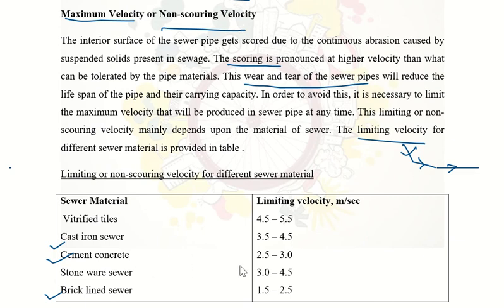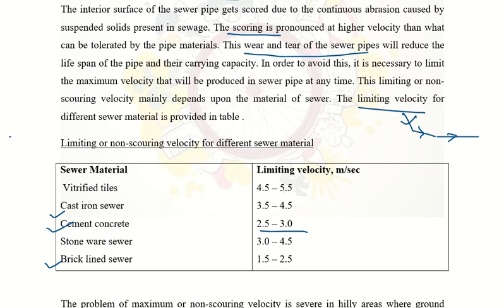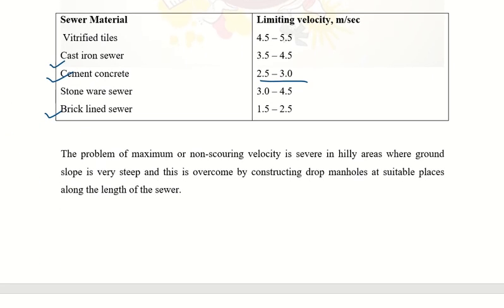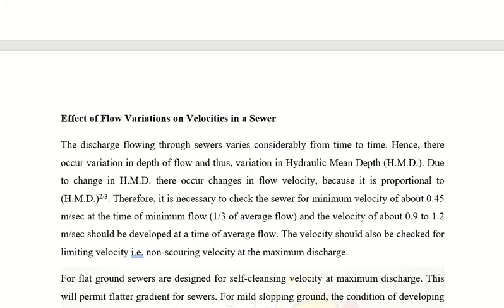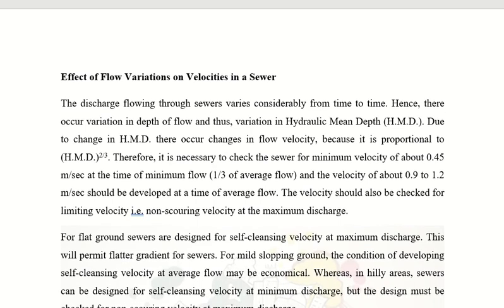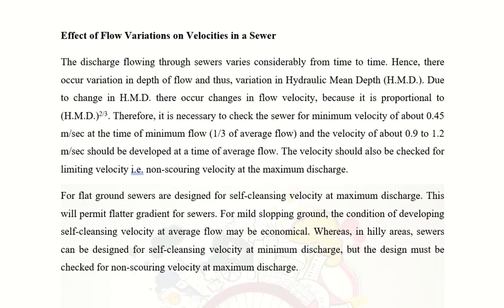The limiting velocity or maximum velocity or non-scouring velocity for different materials is given. For cement concrete, it is 2.5 to 3 meters per second. These are the important things to consider while designing a hydraulic sewer for passing sewage.